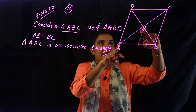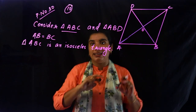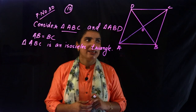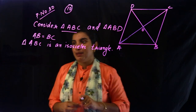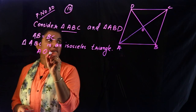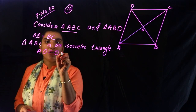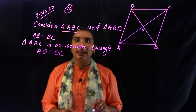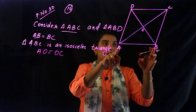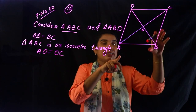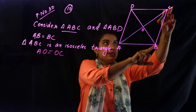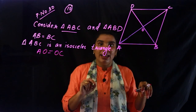Therefore, AO is equal to OC — that is, BD bisects AC. Since ABC is an isosceles triangle and AB equals BC, AO is equal to OC.